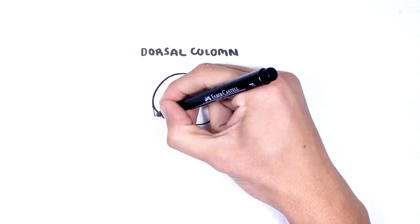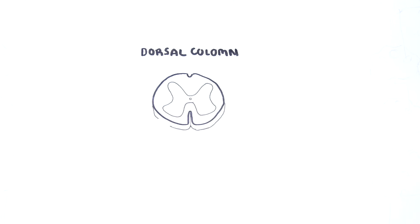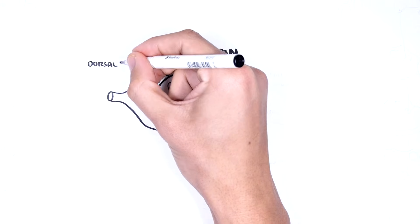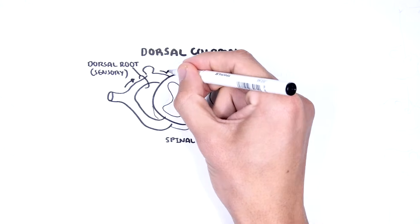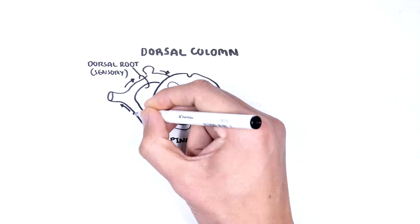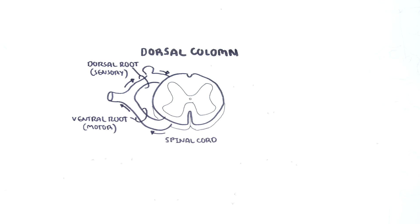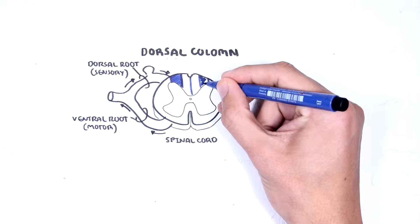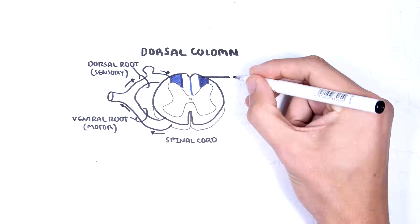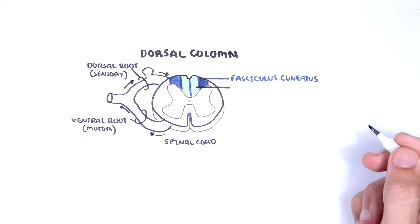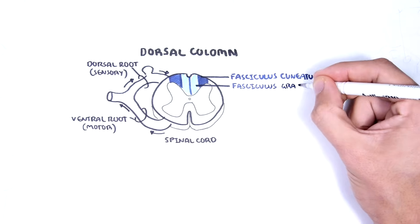Let's revise the spinal cord anatomy and some tracts. Here is a section of the spinal cord. The dorsal root will carry sensory neurons from the periphery to the central nervous system, so to the spinal cord. The ventral roots carry motor neurons from the central nervous system to the peripheral nervous system. The dorsal column tract is here at the back of the spinal cord and can be divided into two parts: laterally is the fasciculus cuneatus and medially is the fasciculus gracilis.